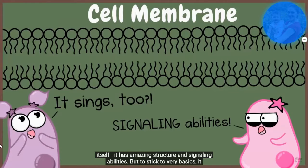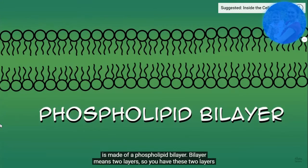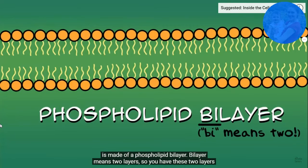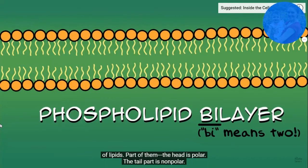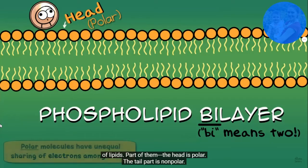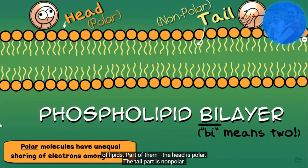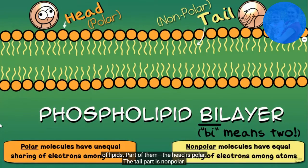But to stick to the very basics, it's made of a phospholipid bilayer. Bilayer means two layers. So you have these two layers of lipids. Now these lipids, they're called phospholipids, well, they have a head that is polar, and they have a tail that is non-polar, making them quite unique.